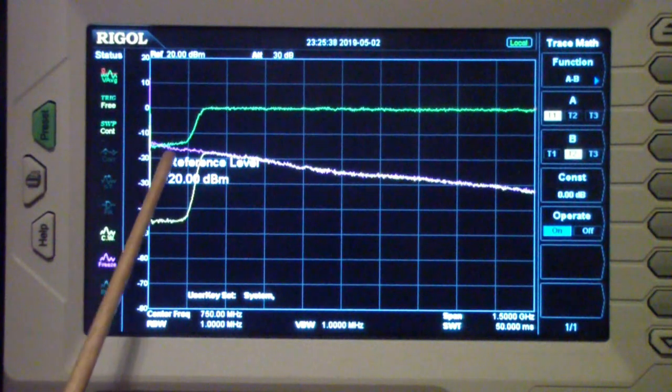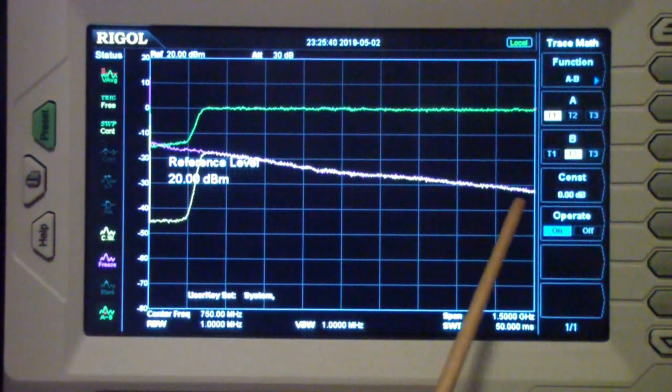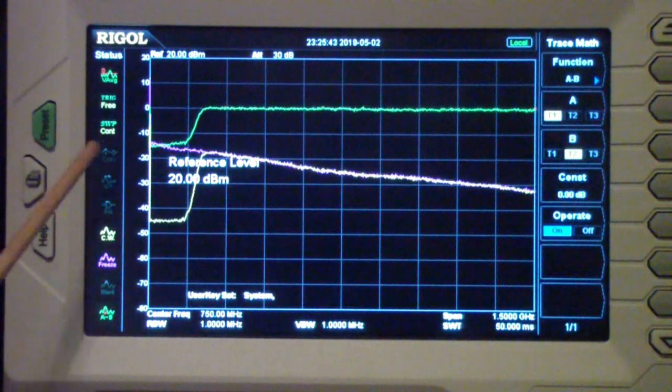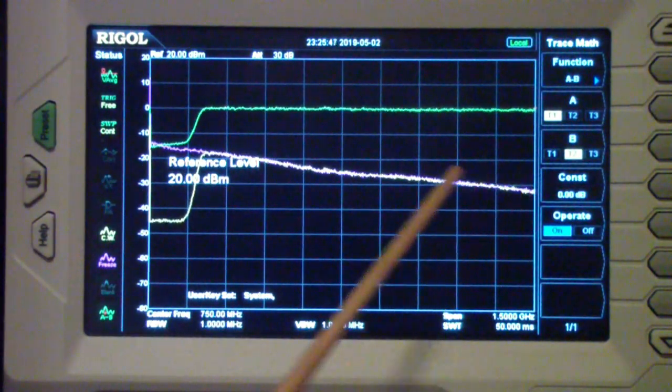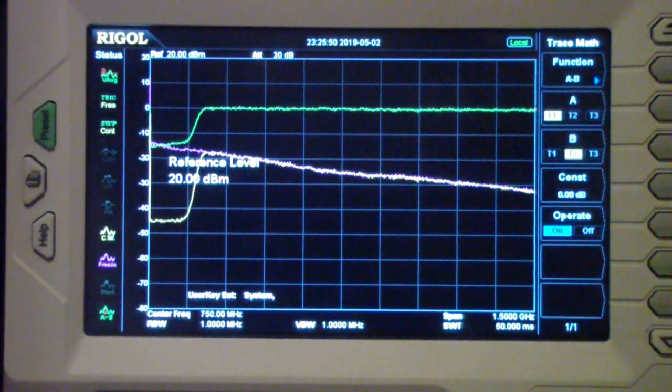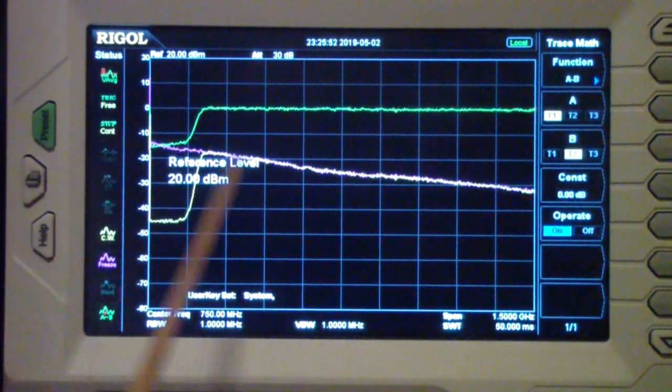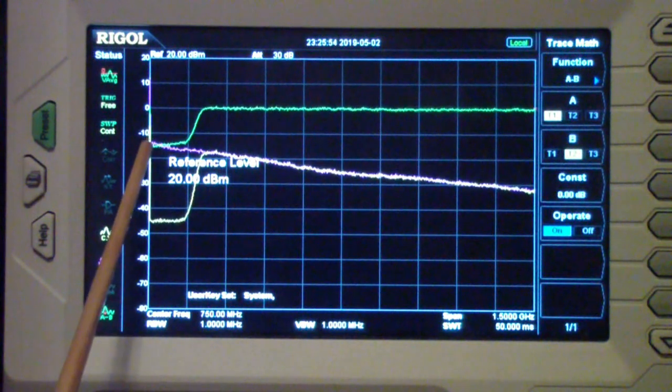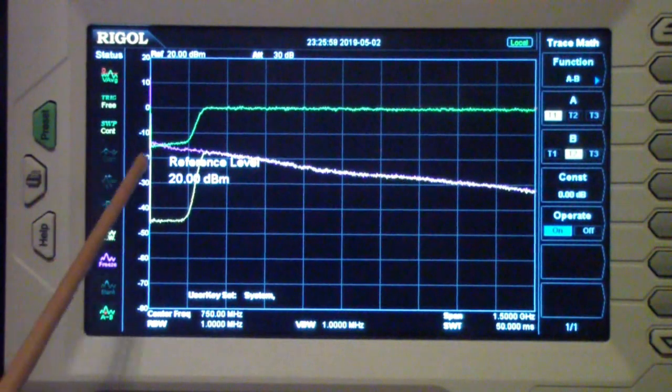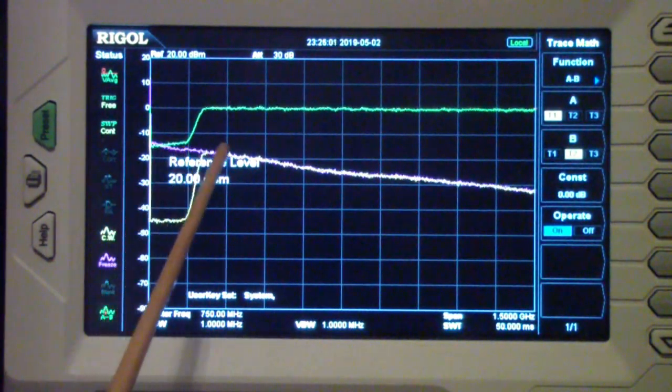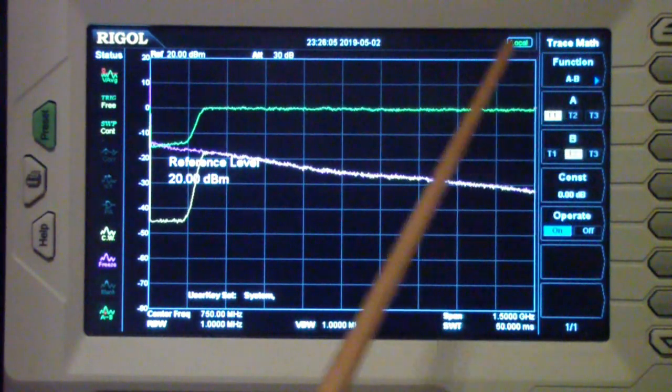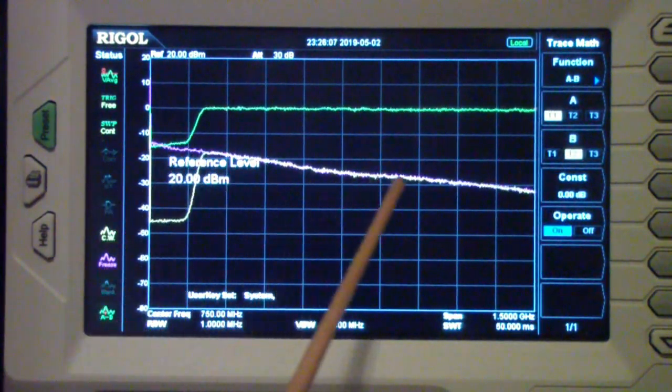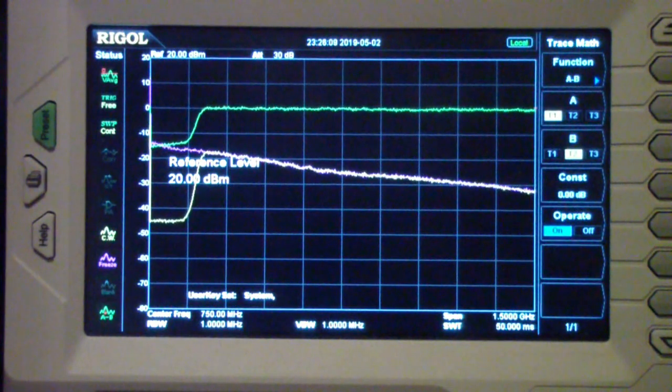The purple trace is the saved value of the output of the noise generator without the filter. In other words, the first thing I did is I hooked up the noise source to the Rigol and then I took a trace using the trace function and basically stored it in trace B.